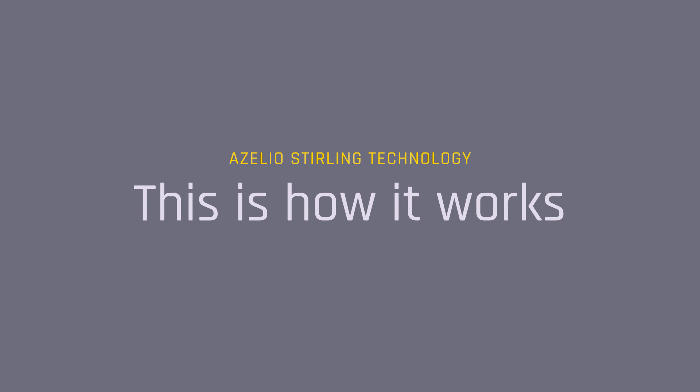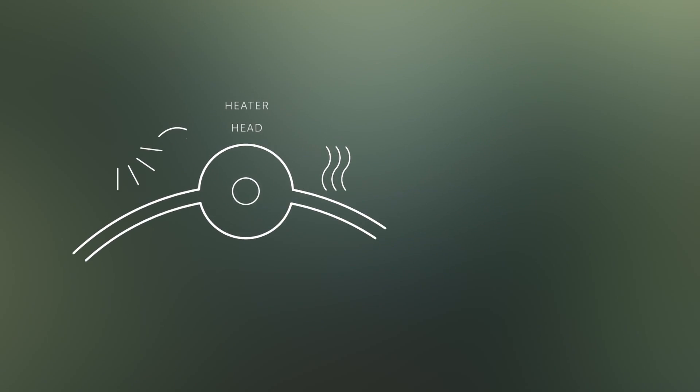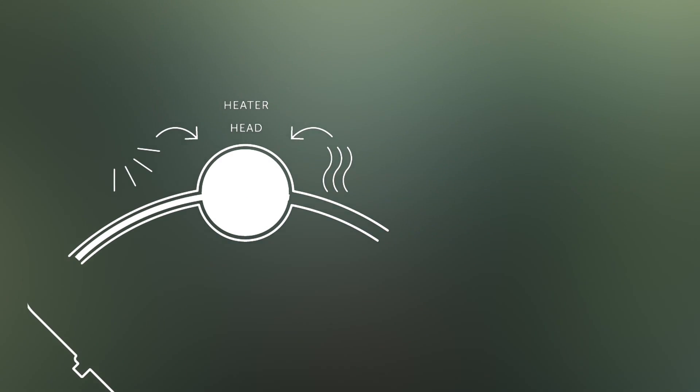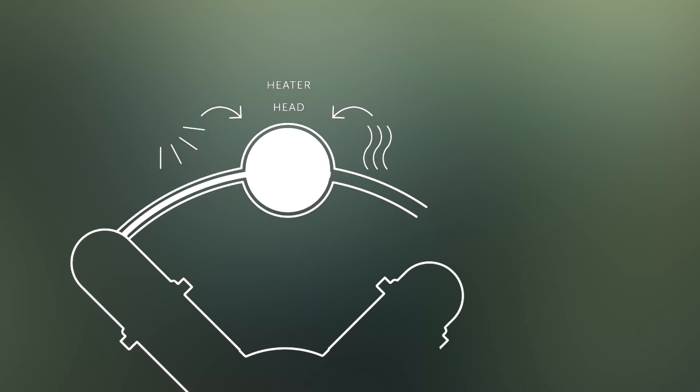The basic principle of the Stirling engine is that you have a working gas. This working gas you heat up and you cool down. By doing so you expand it and contract it.